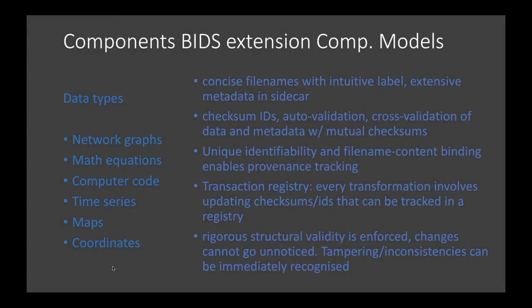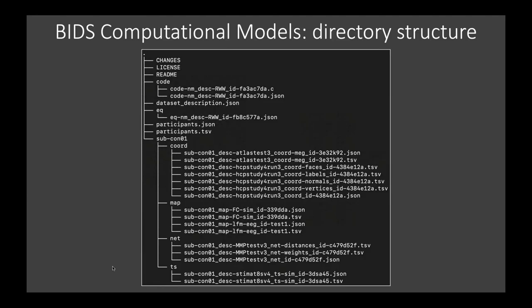This could take the shape of a worldwide registry where every manipulation of a dataset needs to be registered, or it could also be local databases. In principle, it would not be possible to simply tamper with the file — every change is accompanied by tracking. This creates a chain of provenance information, enforces structural validity rigorously, makes it impossible to have an invalid dataset, and ensures changes cannot go unnoticed and inconsistencies can be immediately recognized.